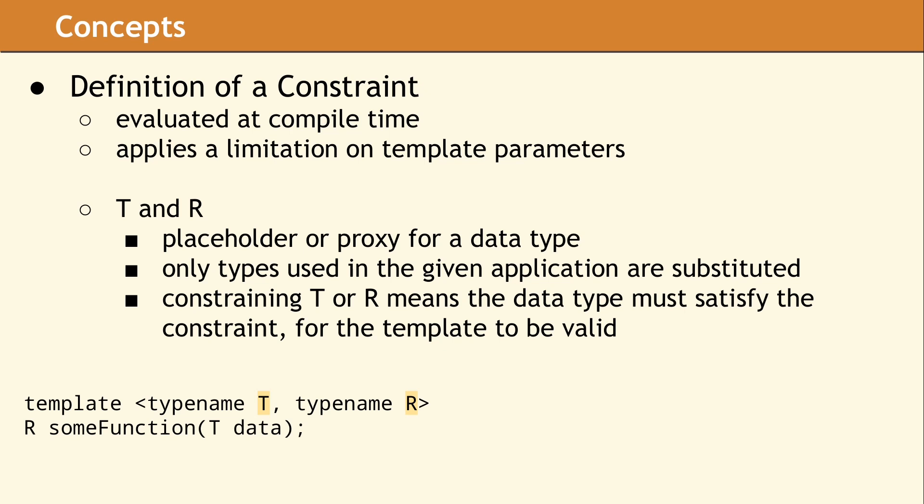In this small example of a templated function, there are two template parameters named T and R. Based on the definition of a template, these are placeholders for a data type which will not be known until the function is compiled. Only the data types that are actually used in your application will be substituted for T and R. If a constraint is added for T or R, then those restrictions must be satisfied in order for this templated function to be instantiated and available at runtime.